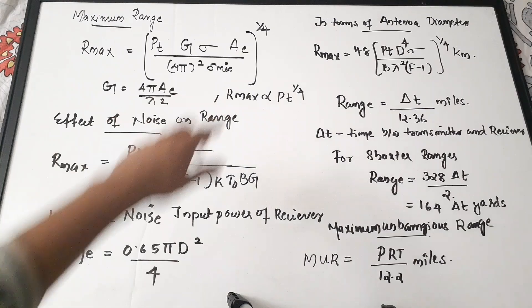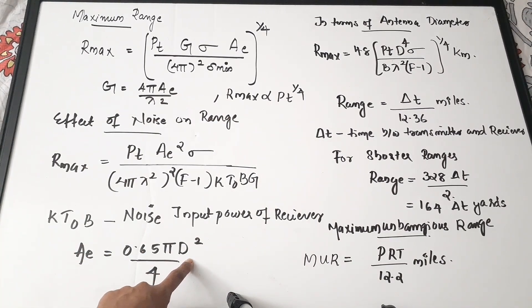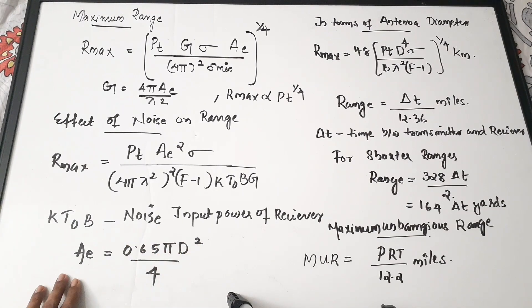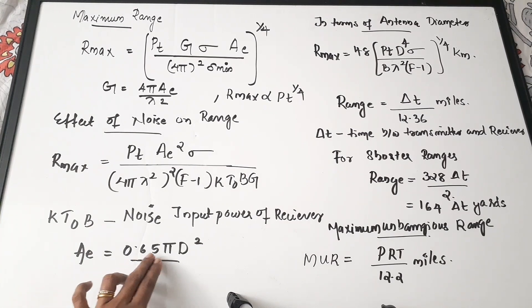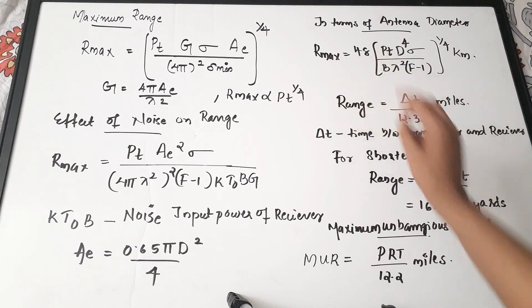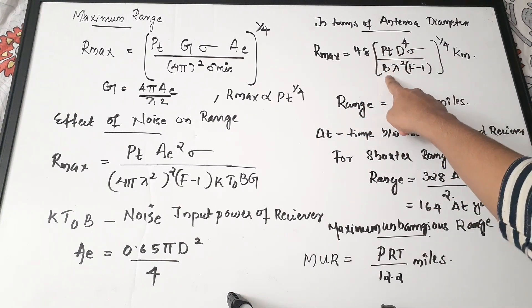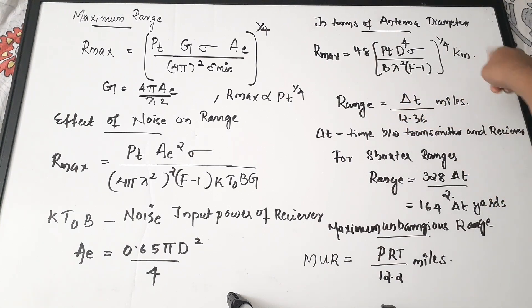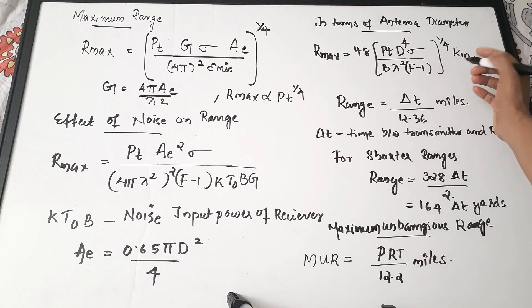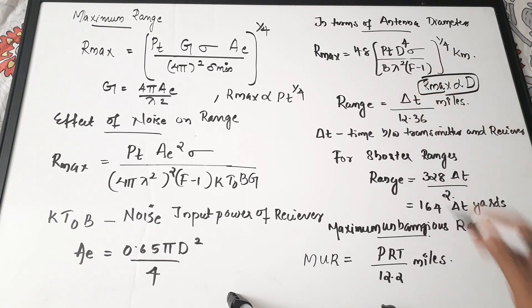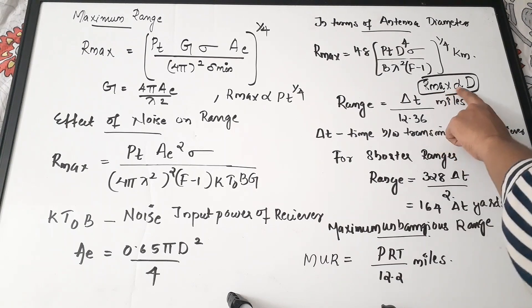The antenna area A can be written in terms of diameter D as A equals 0.65 × π × D² / 4. Substituting this into the range equation gives R_max equals the fourth root of (48 × Pt × D⁴ × σ) divided by (λ² × (F−1) × Km), where Km is a constant for the remaining terms. From this, R_max is directly proportional to the antenna diameter D.